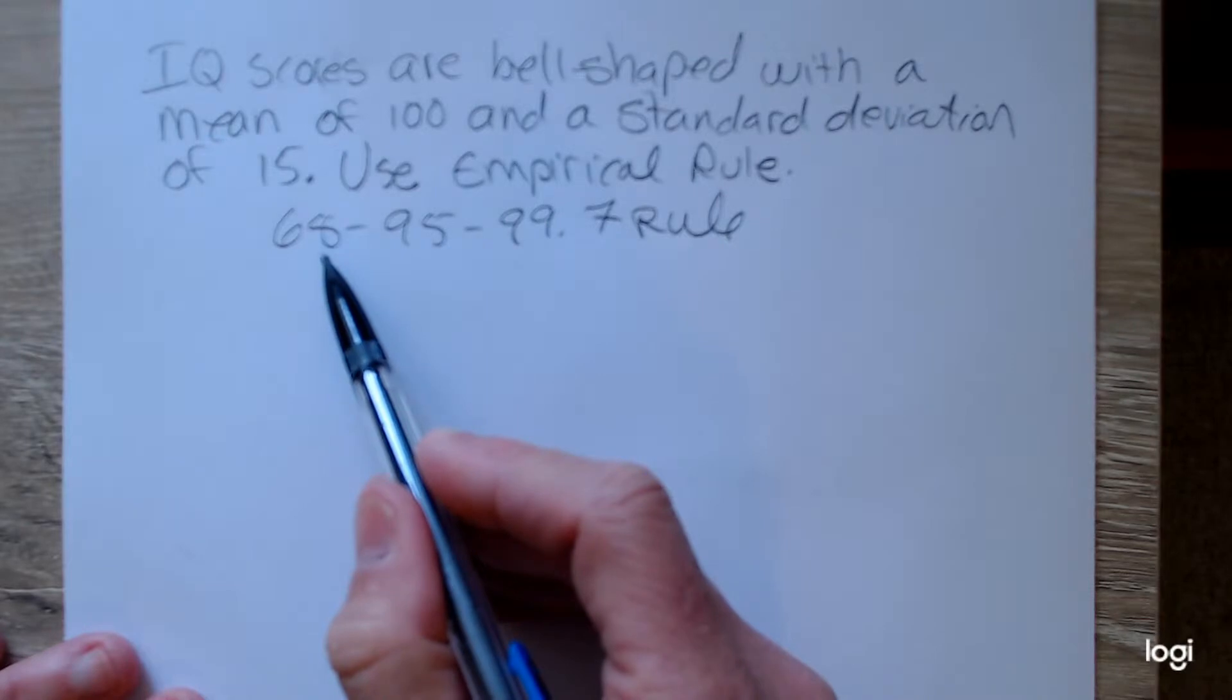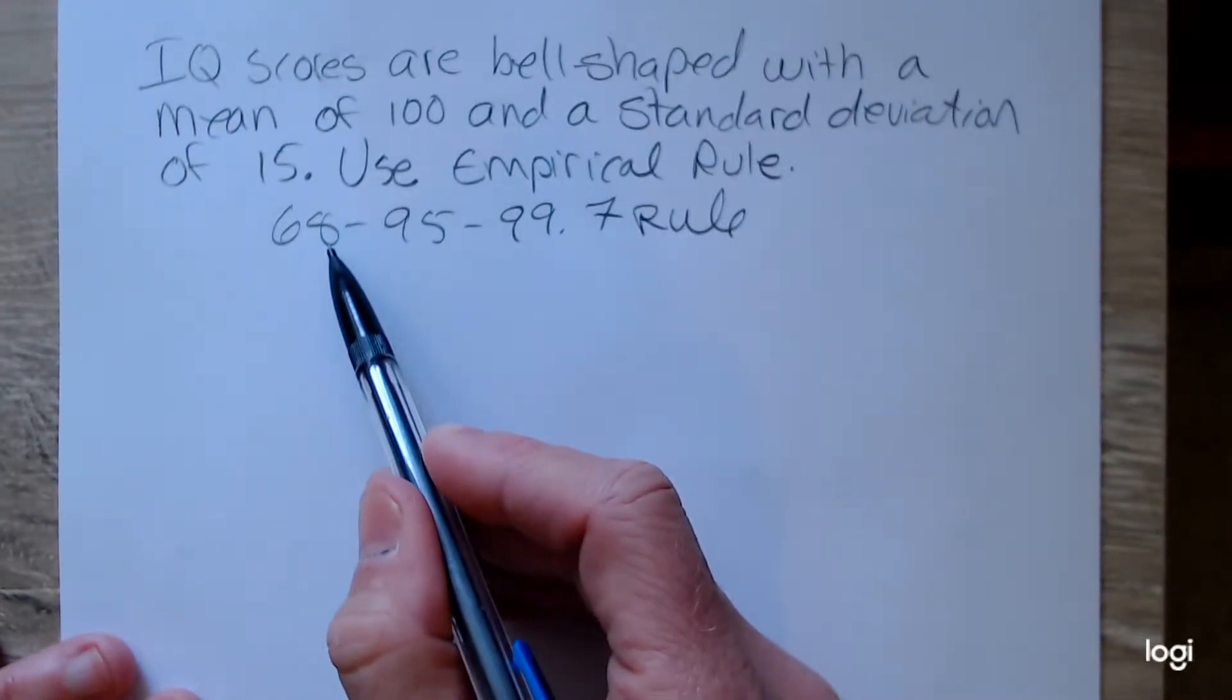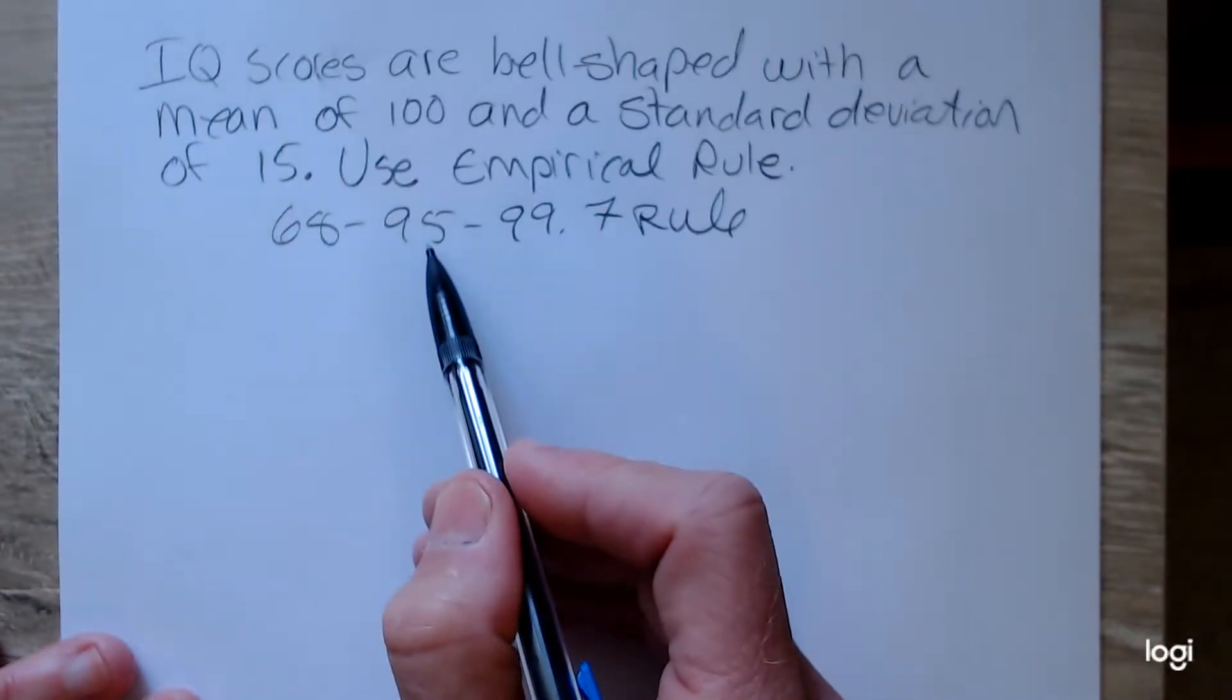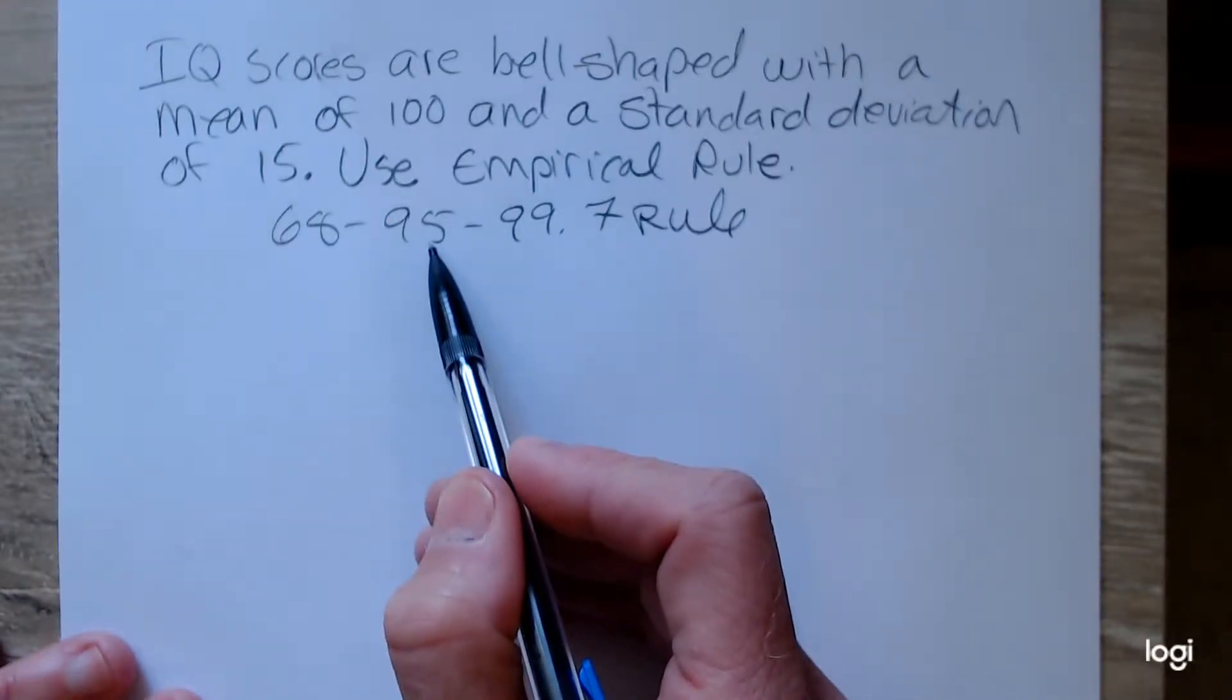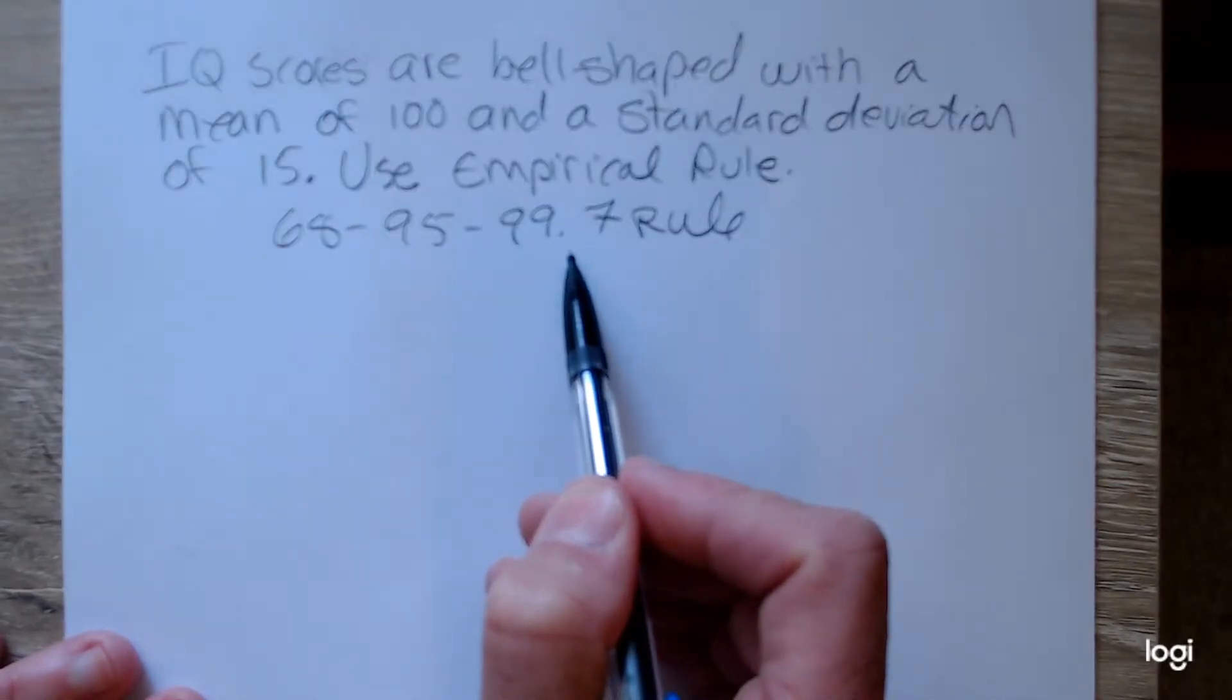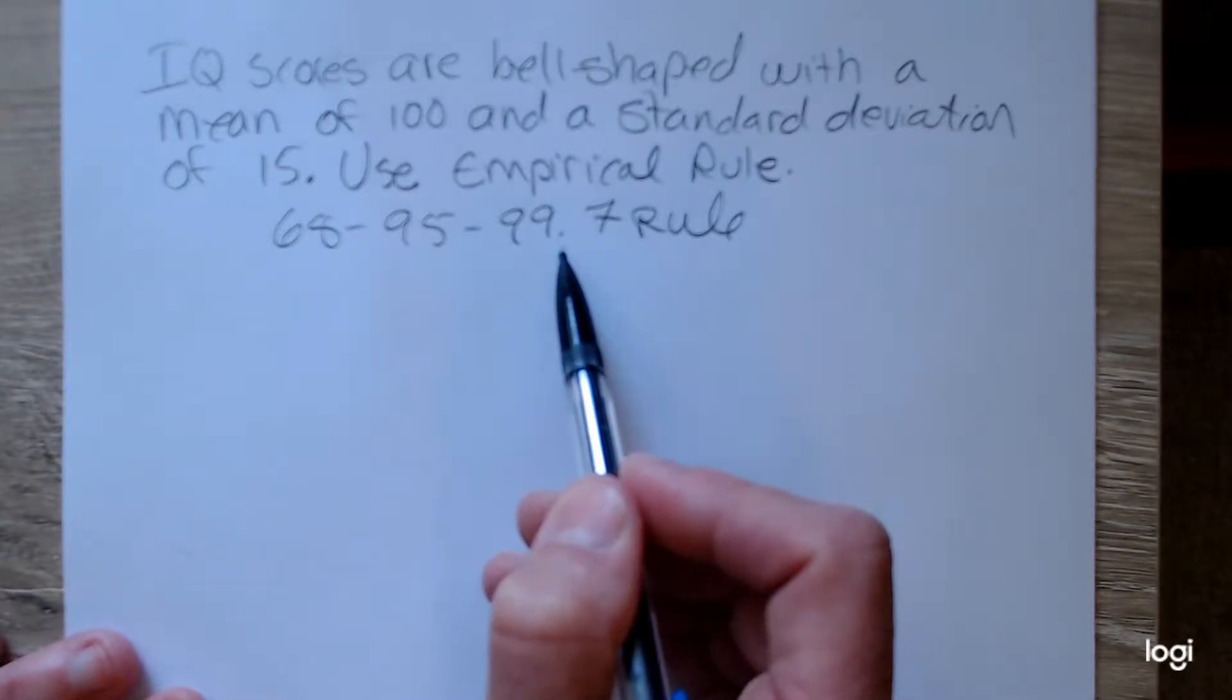68% of the values are captured within one standard deviation of the mean, 95% of the values are captured within two standard deviations of the mean, and 99.7% of the values lie within three standard deviations of the mean.